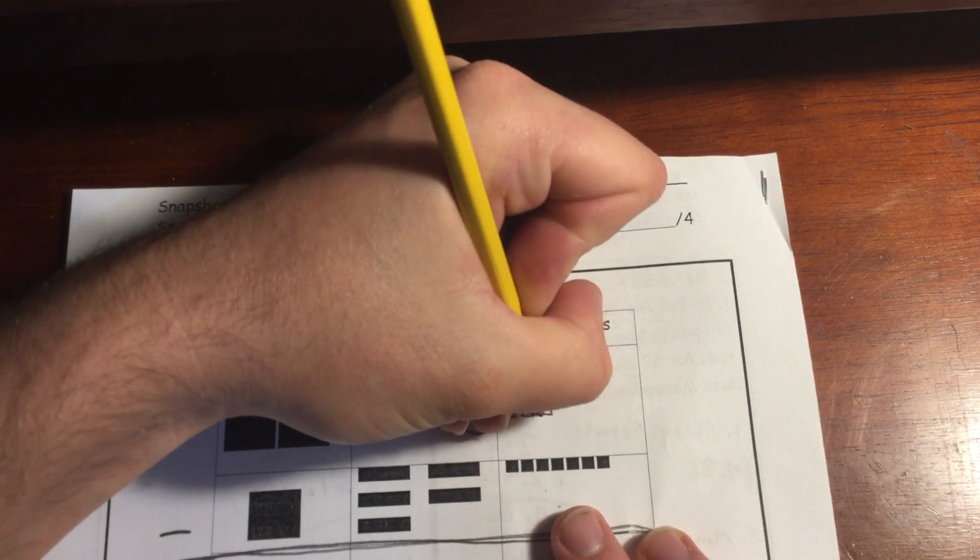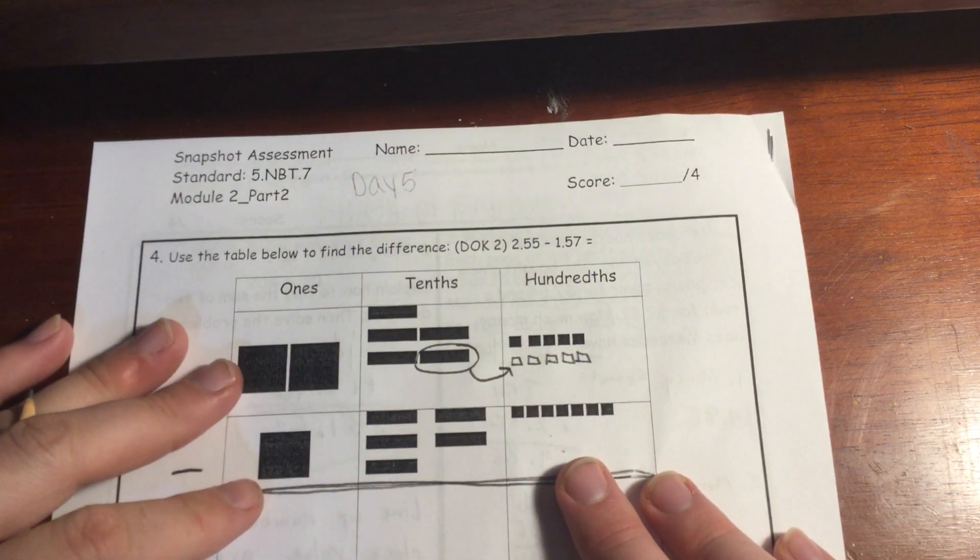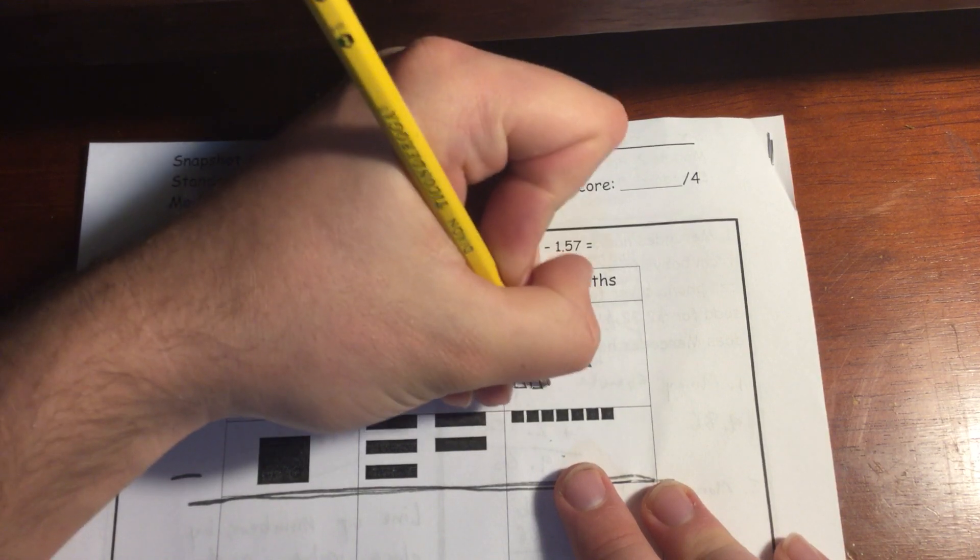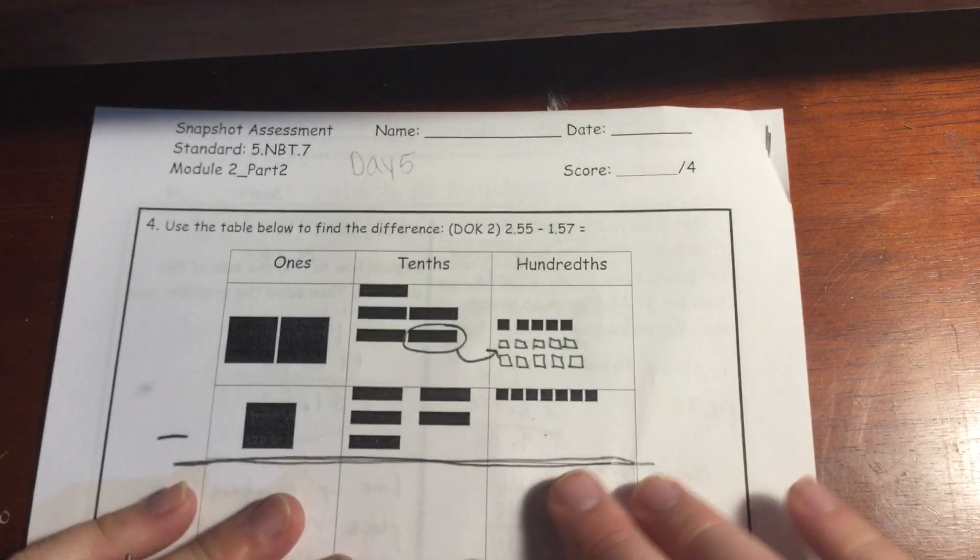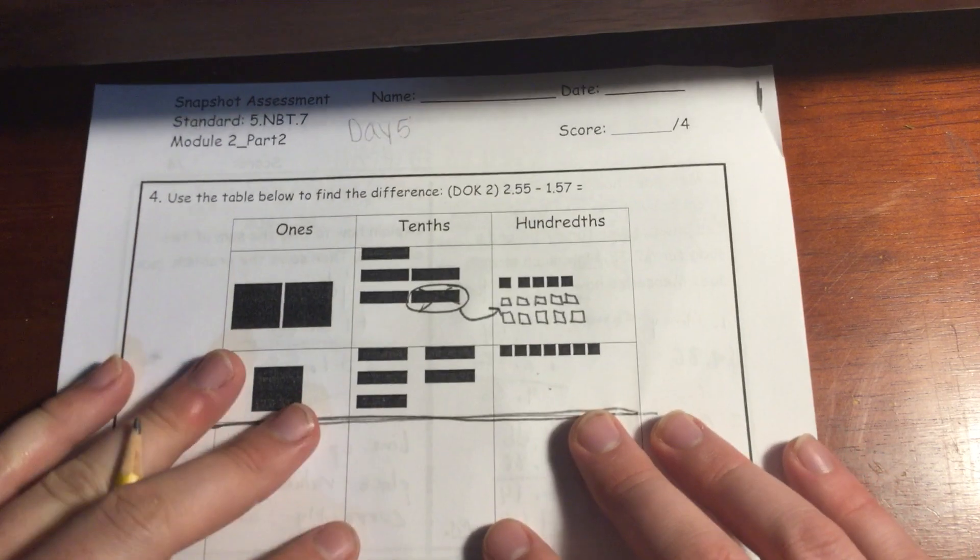And so I'm going to do the same squares. One, two, three, four, five. I'm going to do them in groups of five to keep it nice and organized. One, two, three, four, five. So I regrouped 10 and I got rid of that guy over there in the tenths.